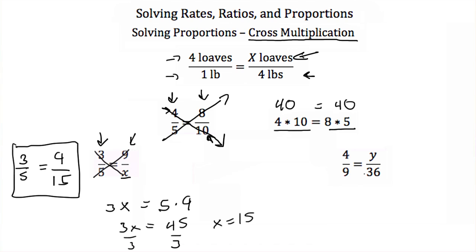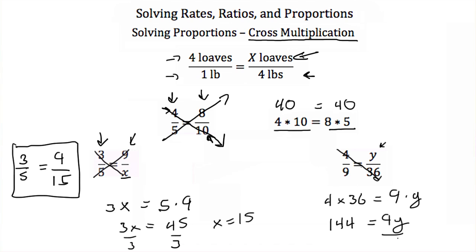Let's try the next example. Here we have the ratio 4 over 9, equal to some number over 36, or the ratio 4 over 9 is in the same proportion as y over 36. So again, you can just cross multiply: 4 times 36 equals 9 times y. Well, 4 times 36 is 144, and that equals 9 times y. Divide by 9, and you get y equals 16. So 4 ninths is in the same proportion as 16 over 36.